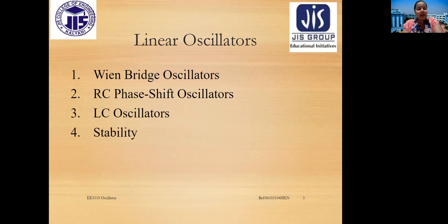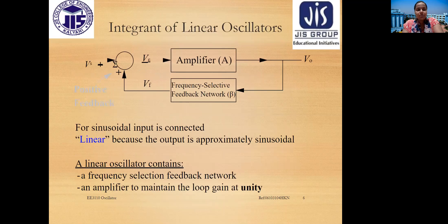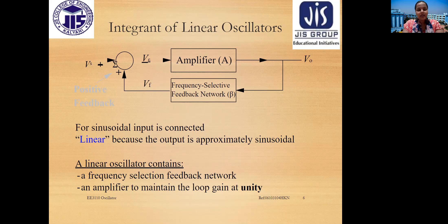Linear oscillators include the Wein bridge oscillator, RC shift oscillator, and LC oscillator. A linear oscillator uses a positive feedback system where the input voltage and feedback signal are summed, amplified to produce output, and a portion is fed back through a frequency selective network. A linear oscillator contains a frequency selective feedback network and an amplifier to maintain the loop gain at unity.